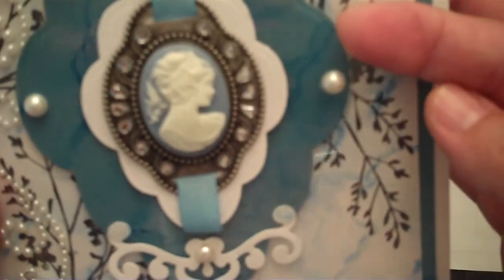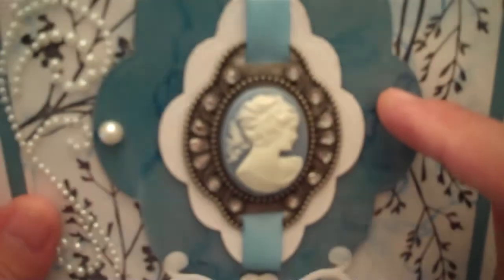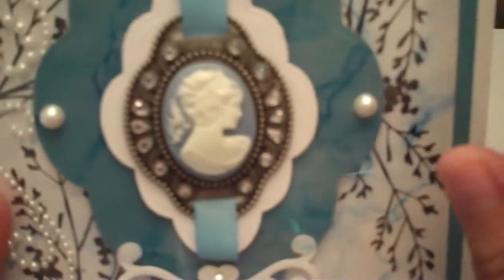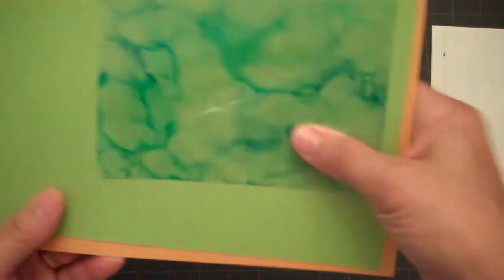and then I put blue cardstock behind it to give it that marbly effect. The look that you get depends on the type of colored cardstock that you put behind the acetate. So I'll give you an example of some of the different looks that you can get depending on what type of cardstock you use behind.